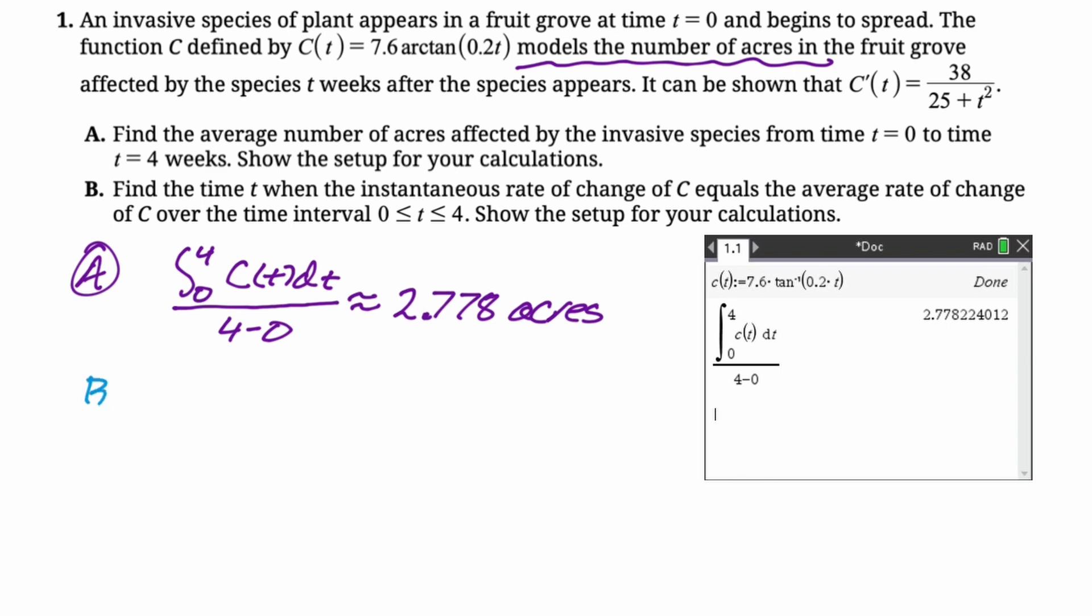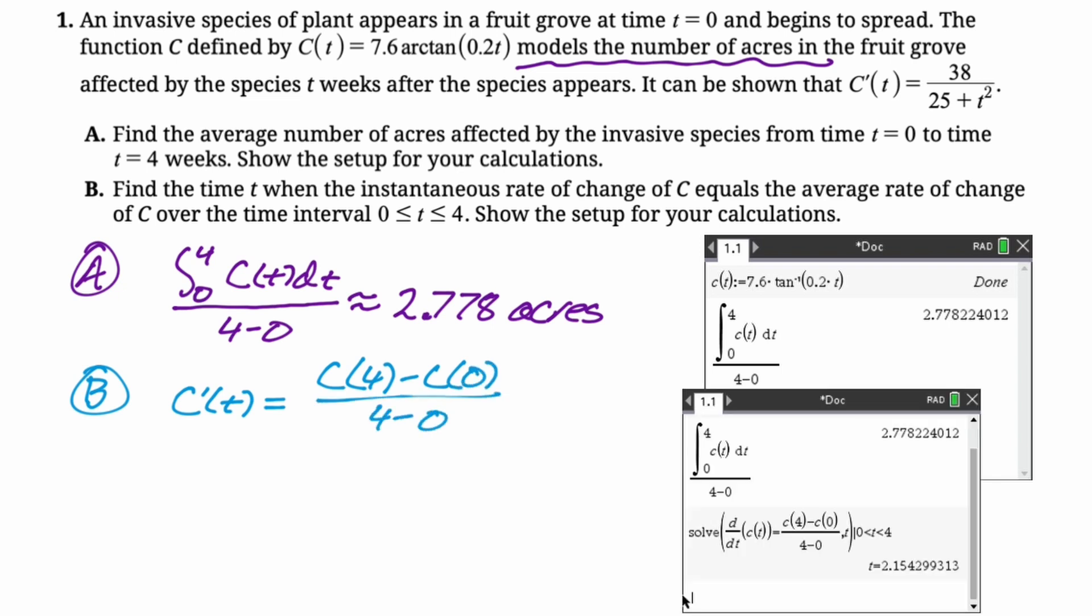We're just going to write down that we need the instantaneous, so C prime, to be equal to the algebra 1 slope, which is going to be C of 4 minus C of 0, divided by 4 minus 0. And then again, it's calculator, so here's the screen from the calculator, and I got approximately 2.154.